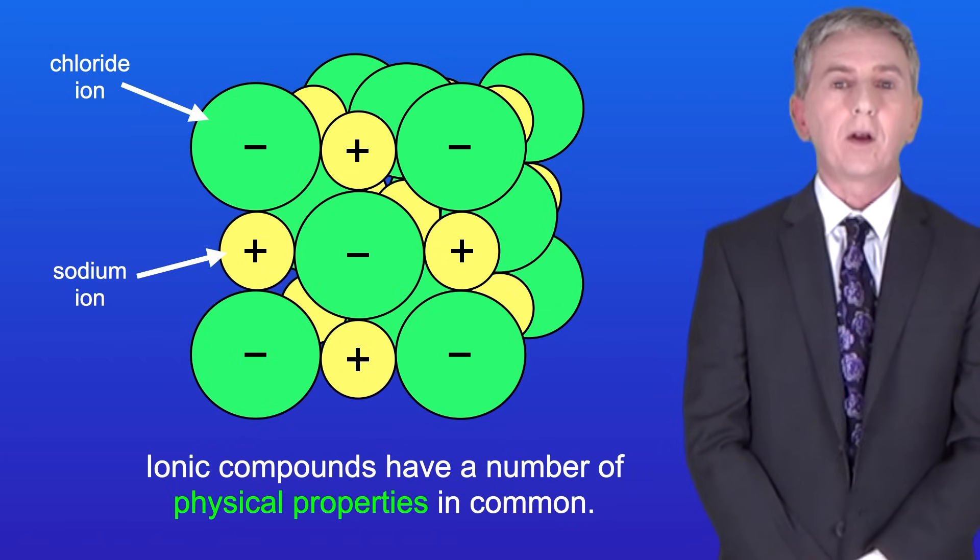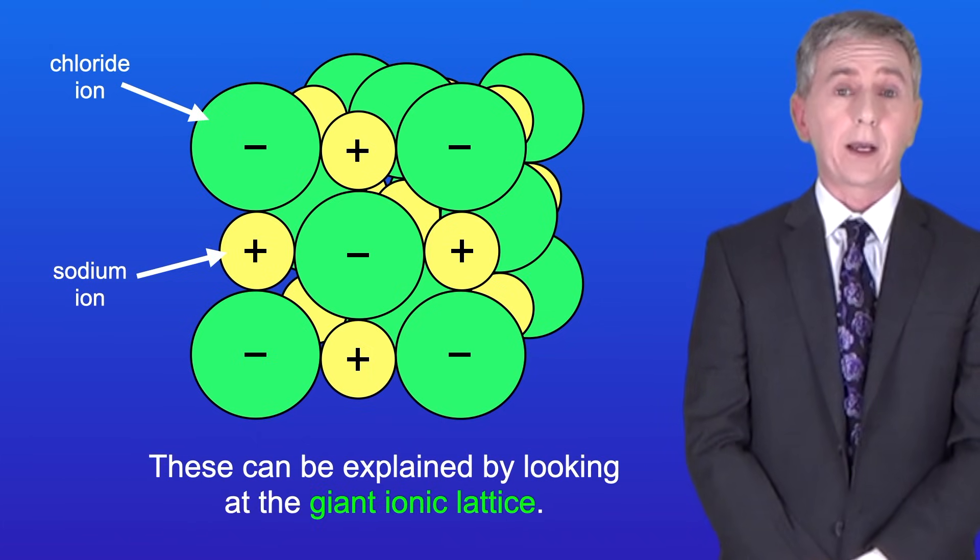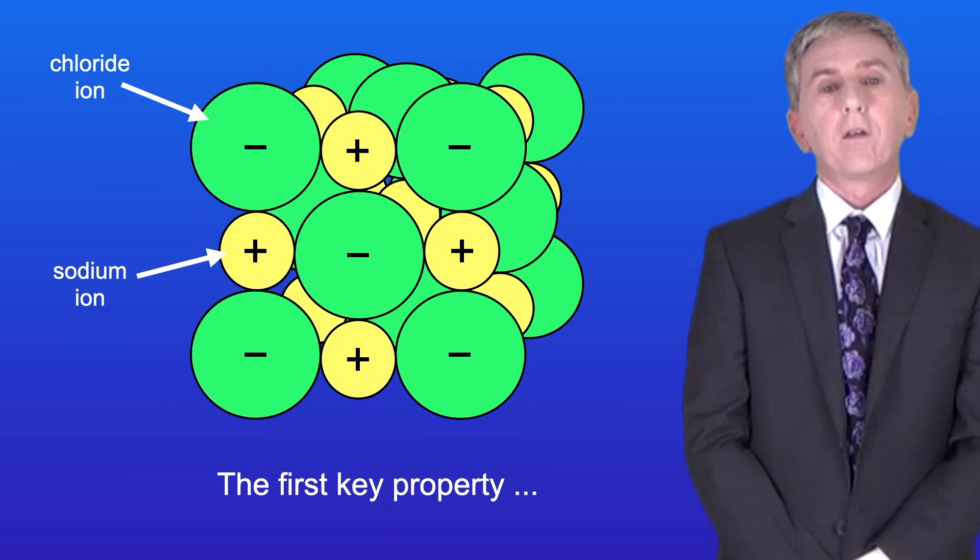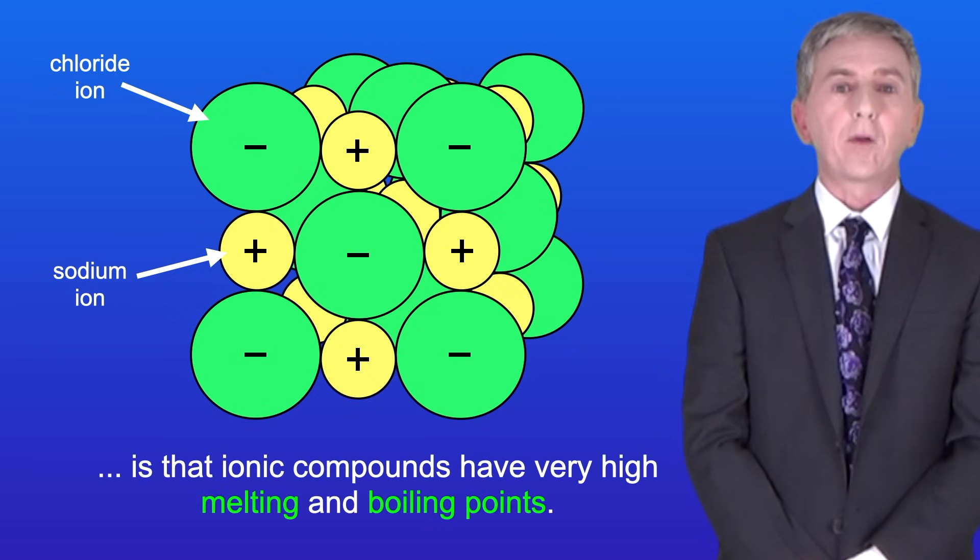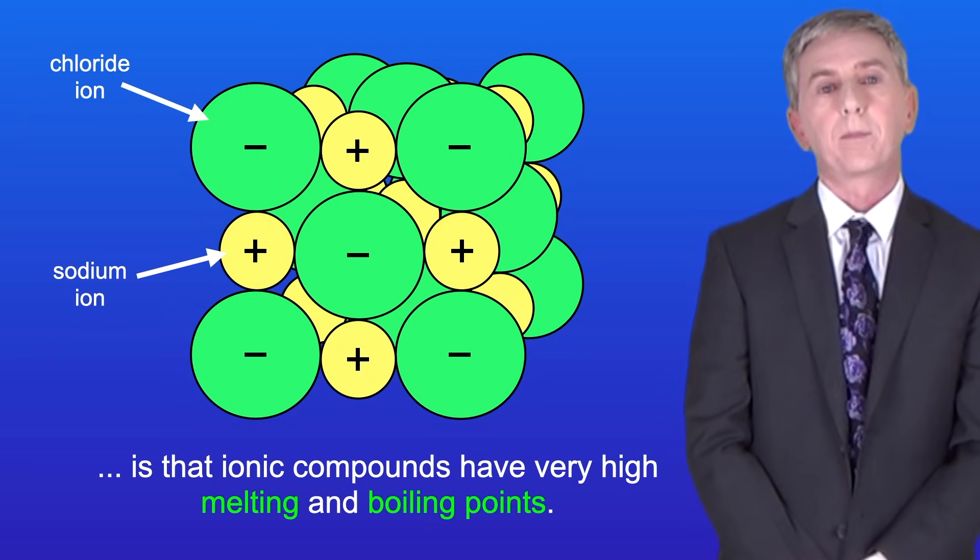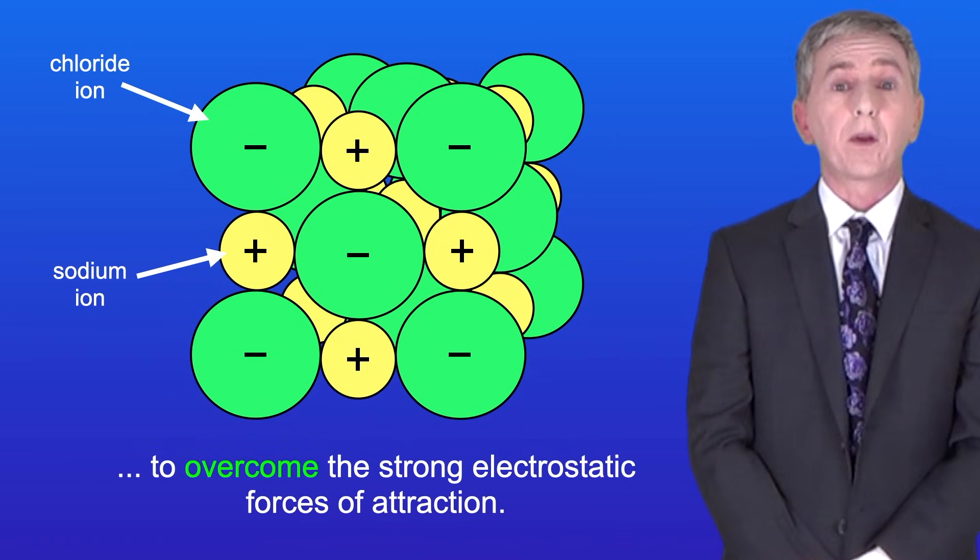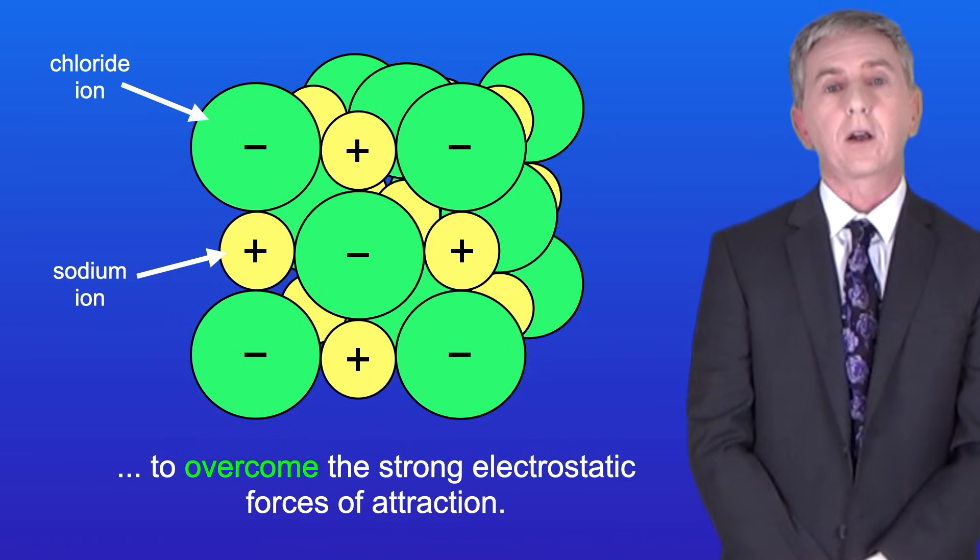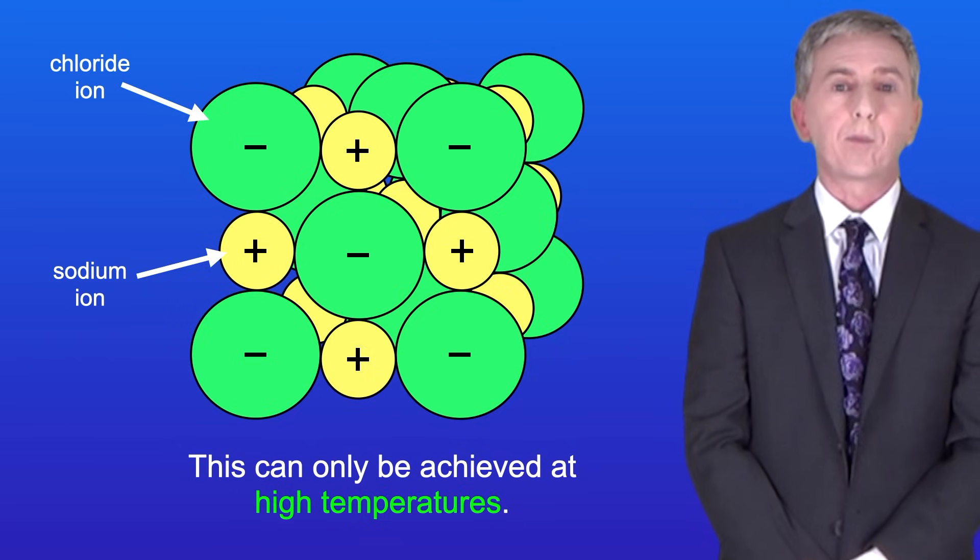Ionic compounds have a number of physical properties in common and these can be explained by looking at the giant ionic lattice. The first key property is that ionic compounds have very high melting and boiling points. That's because it takes a great deal of energy to overcome the strong electrostatic forces of attraction and this can only be achieved at high temperatures.